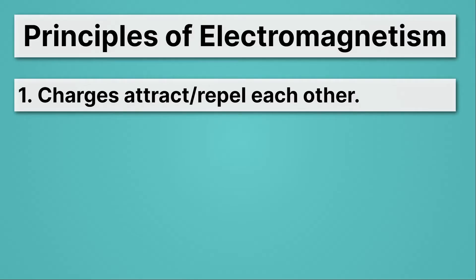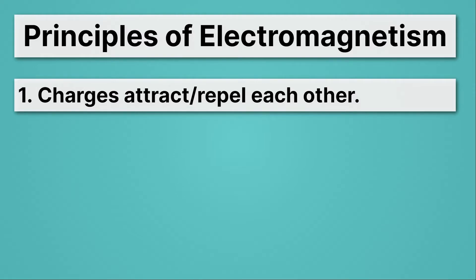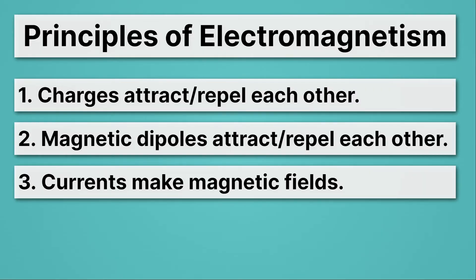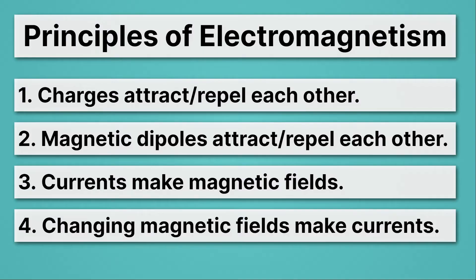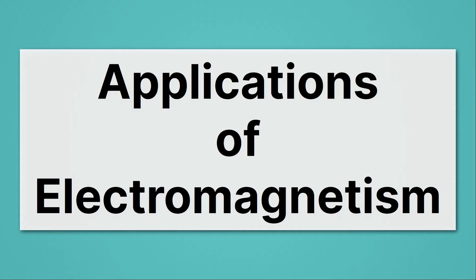Charges attract and repel each other — that's the first principle, stating that negative and positive charges can either attract or repel each other. Magnetic dipoles attract and repel each other as well; we're thinking of magnets with north and south poles that can attract or repel depending on how they're combined. Principle three says that currents make magnetic fields: any time you have a wire with electricity moving through it, it generates a magnetic field. Number four says we can do the opposite — changing magnetic fields make currents. It's these last two principles that are key to many applications of electromagnetism.